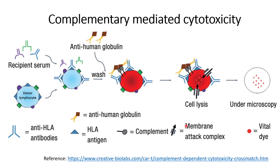The regions where complement formation does not occur will cause cell lysis due to the membrane attack complex that has been formed. This can only be prevented if complement formation occurs. So wherever the anti-human globulin complement formation does not occur, that portion of the membrane leads to cell lysis, which can be visualized using a vital dye. The vital dye becomes part of the intracellular components of the cells, so when cell lysis occurs, the dye can be easily visualized under the microscope.